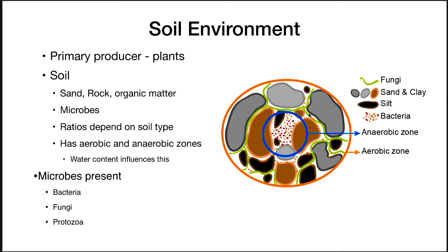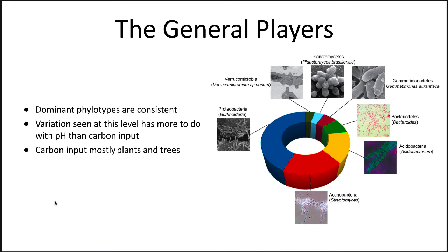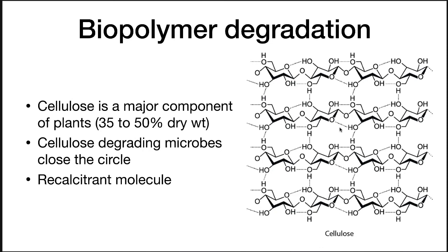Soil has aerobic and anaerobic zones, and water content influences this: drier soil has smaller anaerobic zones, wetter soil has larger ones. Anaerobic zones are normally the inside of soil particles. Microbes present include bacteria, fungi, protozoa, and archaea. The dominant phylotypes found in any soil from any environment are Proteobacteria, Actinobacteria, Acidobacteria, and Bacteroidetes. The relative abundance and major fauna found in each soil change most importantly based upon the pH and salinity of the soil.